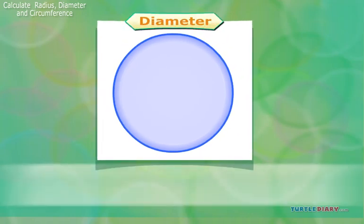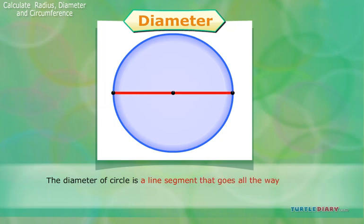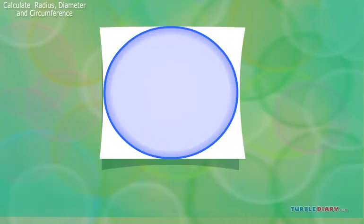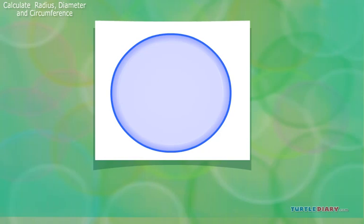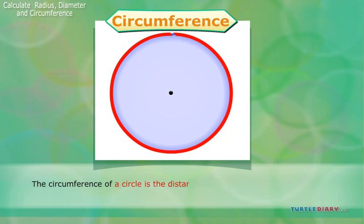Diameter. The diameter of a circle is a line segment that goes all the way across a circle, through the center point. Circumference. The circumference of a circle is the distance around the outside of the circle.